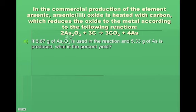So the first example I want us to do is if 8.87 grams of arsenic three oxide, we have 8.87 grams used in the reaction and 5.33 grams of arsenic is formed. What is the percent yield? Now, obviously you can recognize this as a percent yield question because the question says, what is the percent yield? But if it wasn't as obvious and you were just given these two amounts and you're going, okay, well, what do I do with these amounts?